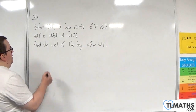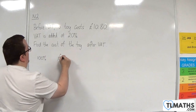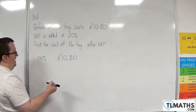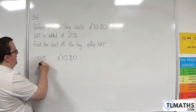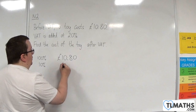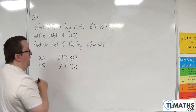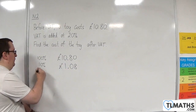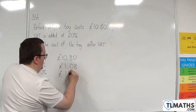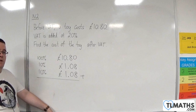Essentially I need to work out what twenty percent of that is and then add it on. So, thinking that a hundred percent is ten pound eighty and I need twenty percent — I could work out ten percent very easily by dividing by ten, and so that would get me one point zero eight, so one pound and eight pence. And so another ten percent would also be one pound and eight pence.